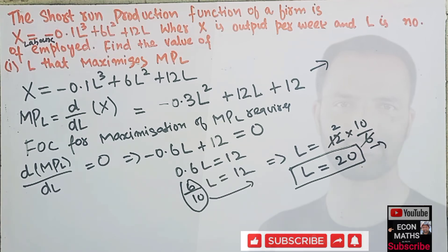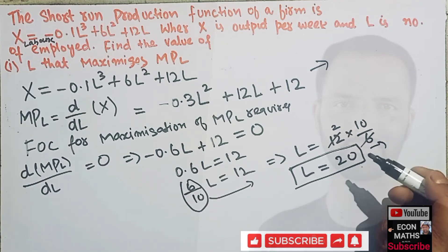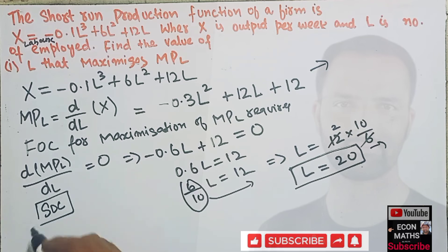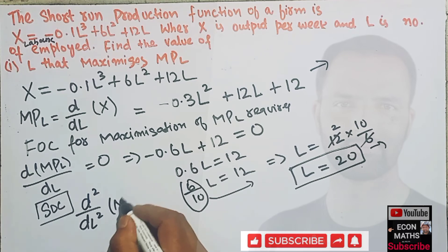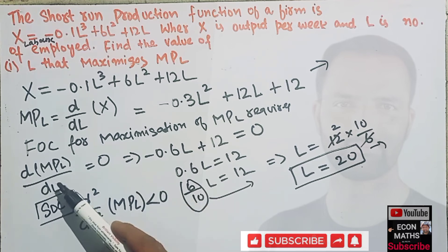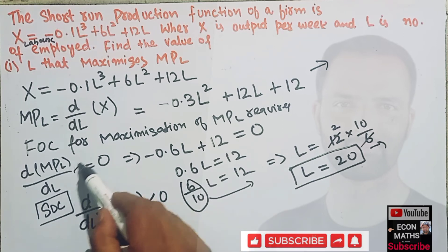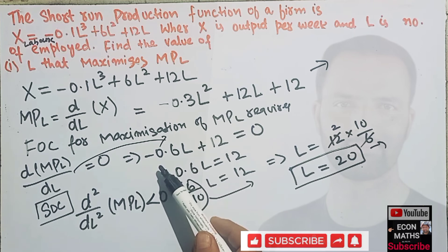Let us make sure this is indeed a maximum by checking the second order condition. The second order condition requires that d squared MPL over dL squared should be less than zero — that is, the second derivative of the marginal product of labor with respect to L must be negative.